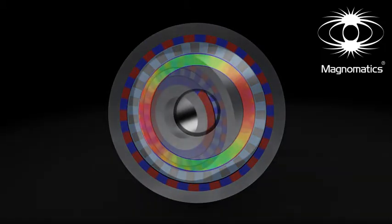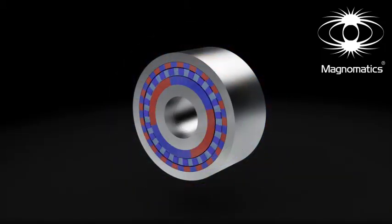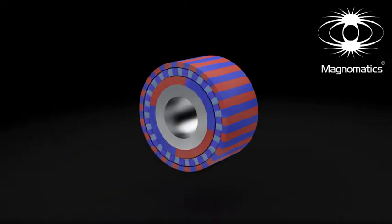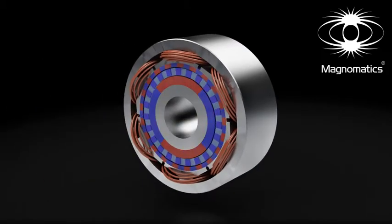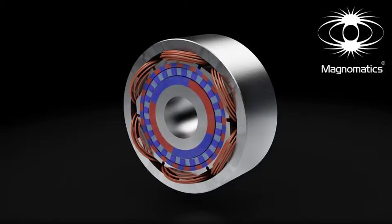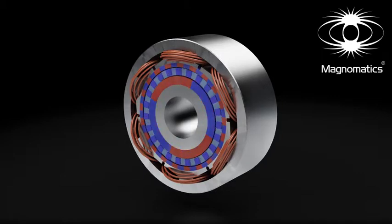A further evolution of magnetic gear technology is realized by introducing a stator with electrical windings around the gear. This creates a very compact motor or generator that is exceptionally powerful at low-speed operation compared to all other technologies.